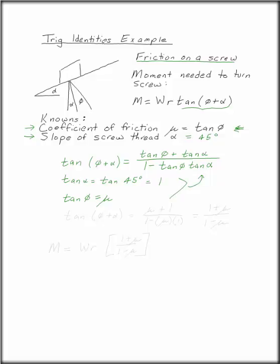This is the coefficient of friction. We can plug both of these two things into this sum and we have tangent of phi plus alpha is mu plus 1 over 1 minus mu times 1, or 1 plus mu over 1 minus mu.